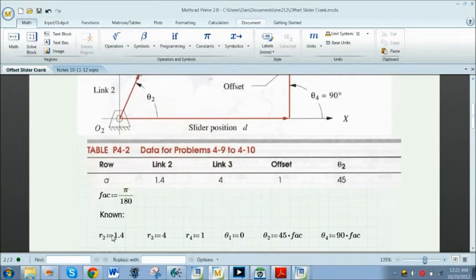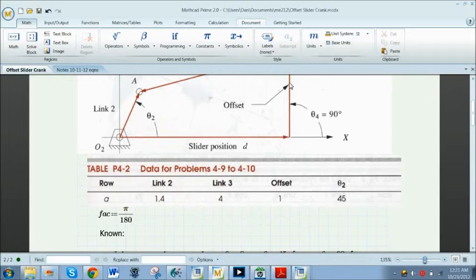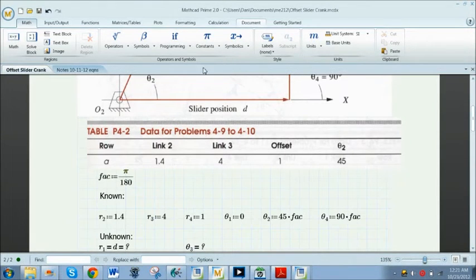I assigned variables using the colon operator just as given by the table above. Some things to notice: I just called the offset r4. We know that theta 4 is 90 degrees and that theta 1 is 0 degrees along the x-axis here.